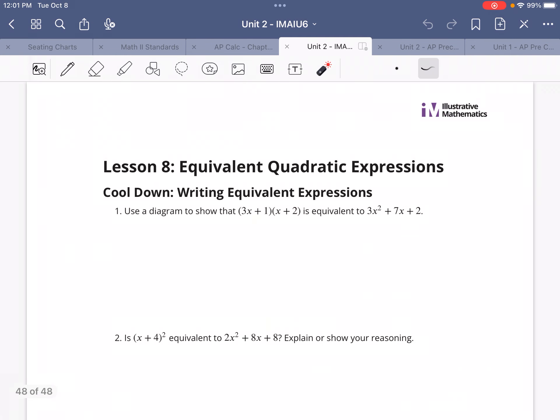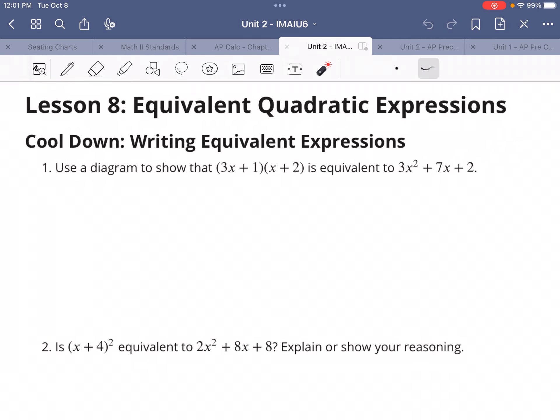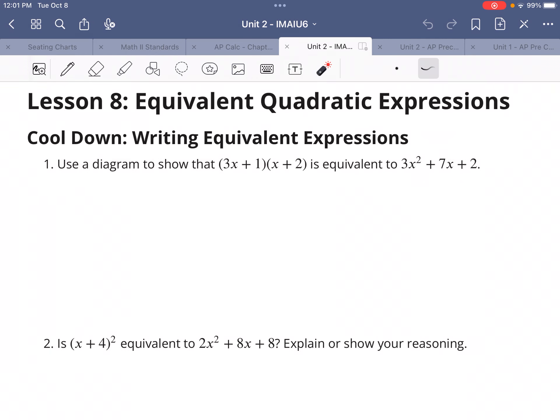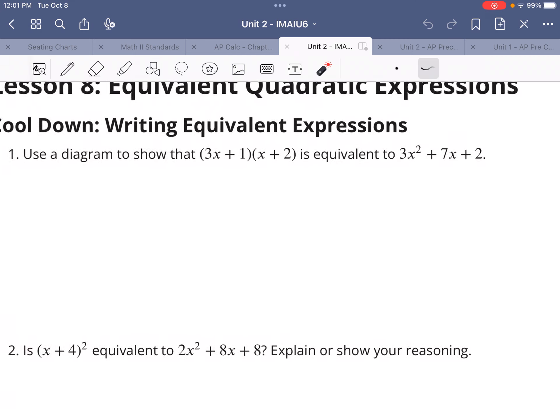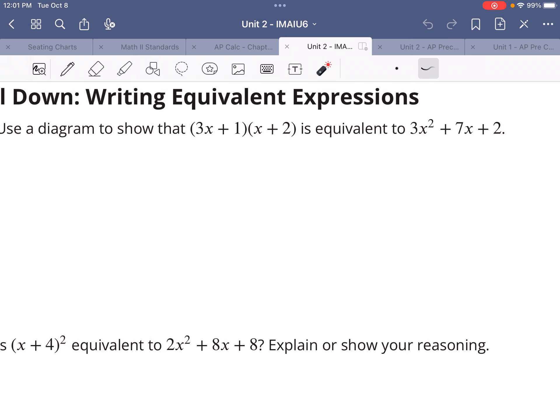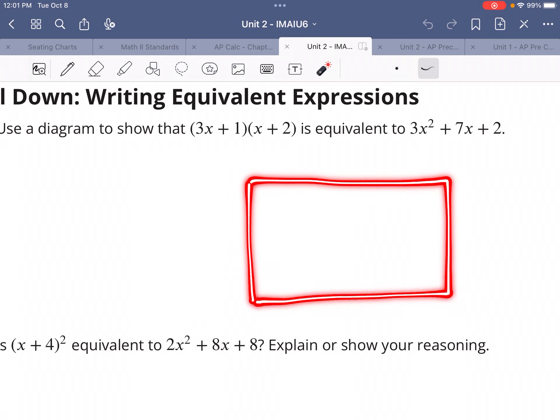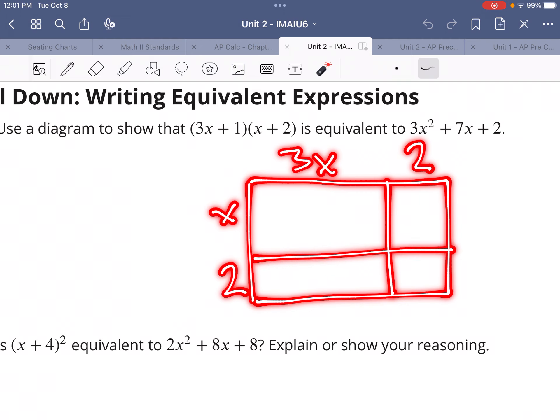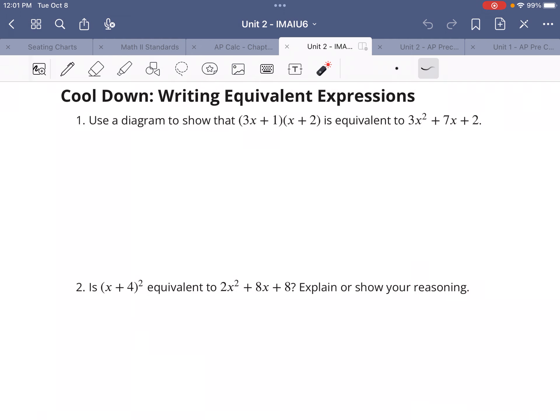So let's look at the cooldown. Use a diagram to show that (3x + 1)(x + 2) is equivalent to 3x² + 7x + 2. Draw a diagram just like we did before, where you're going to have 3x and 1 times x and 2. Fill it in, add together your like terms and see if it comes out to be that.